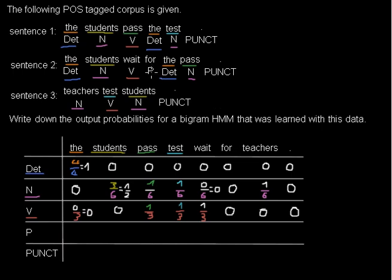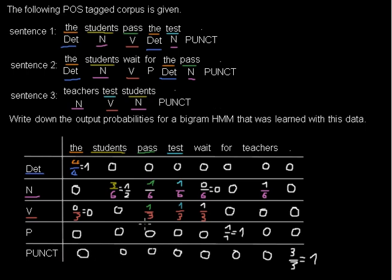So what's left? We have for, which is a P. We only have for once, and P is only once, and they work together. So this is one over one, so it is one, and every other case will be zero because P never emits anything else than for. And last but not least, we have the dot three times, and we have PUNCT three times. So we have three over three, which is the same as probability one, and the other cases are just zero. And that's how we get the output probabilities.